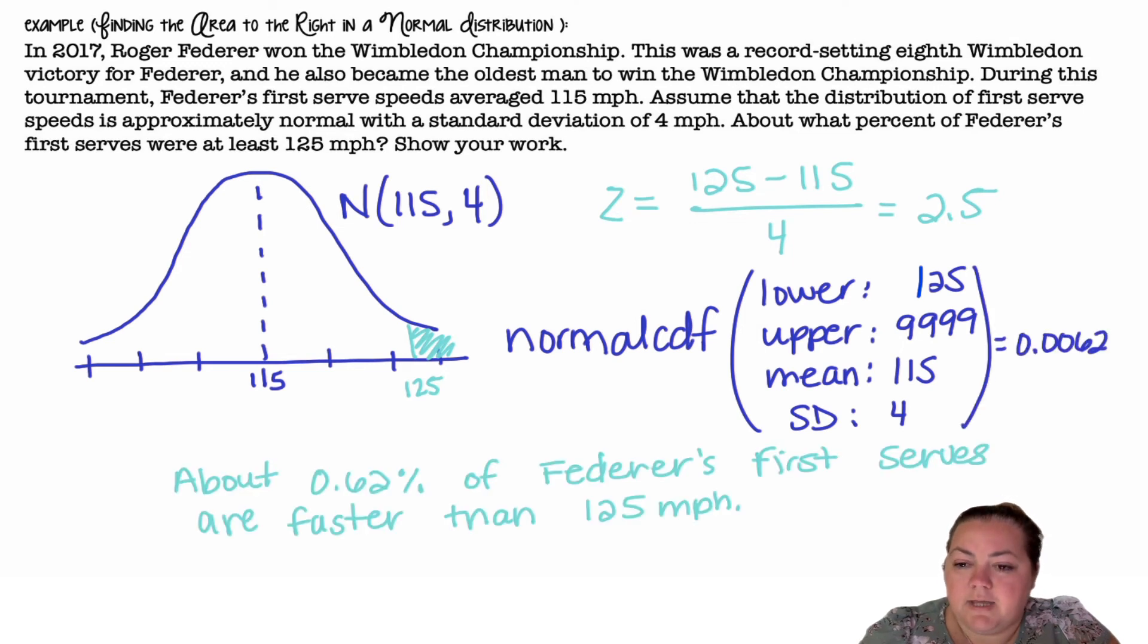Alright, when I put that in, I get 0.0062. So about 0.62% of Federer's First Serves are faster than 125 miles per hour.